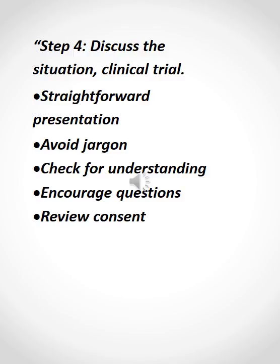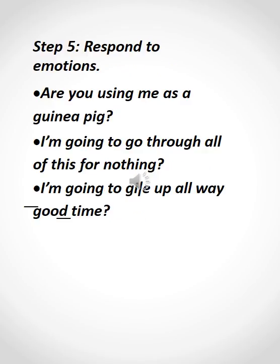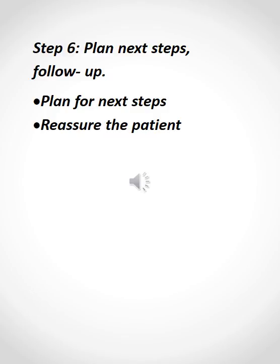Step 5: Respond to emotions. Common patient concerns include: 'Are you using me as a guinea pig?', 'I am going to go through all of this for nothing,' and 'I am going to give up all my good time.' Step 6: Plan next steps — follow up, plan for next steps, and reassure the patient.